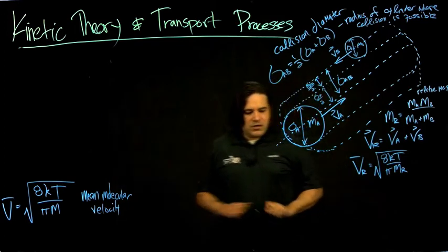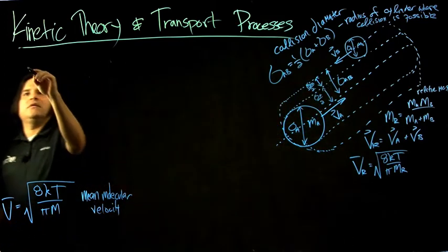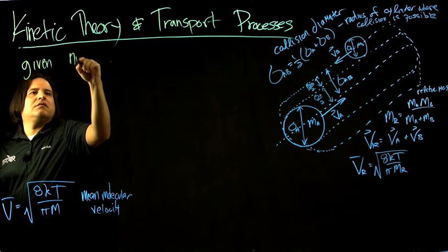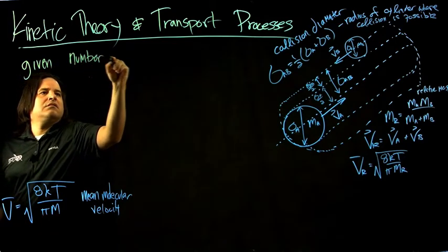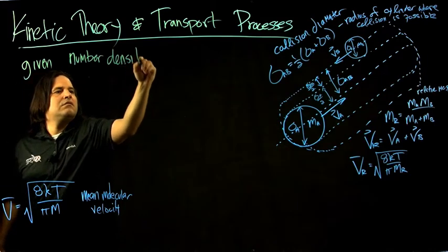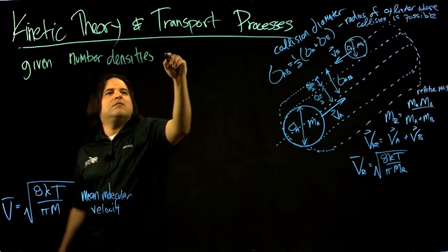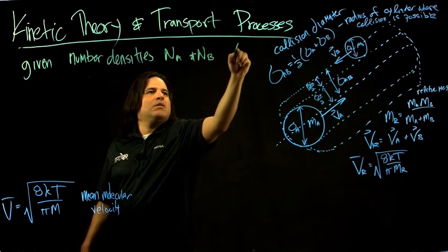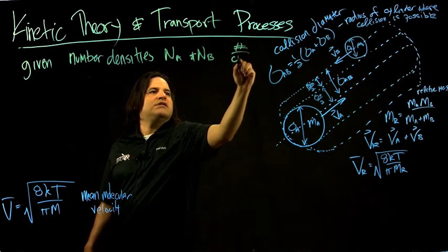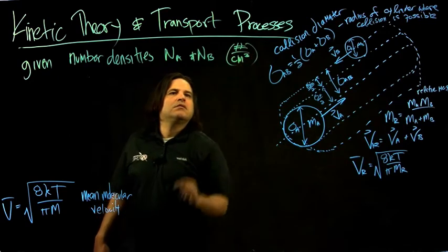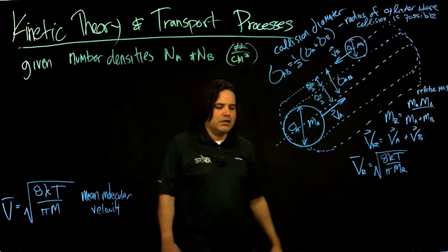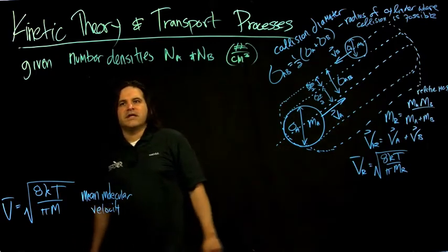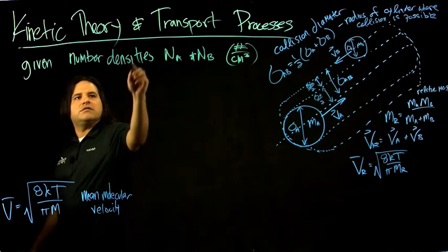What we can say is: given number densities N_A and N_B—which are numbers per volume, let's say per centimeter cubed—those are typical volumes for the scale of this analysis.